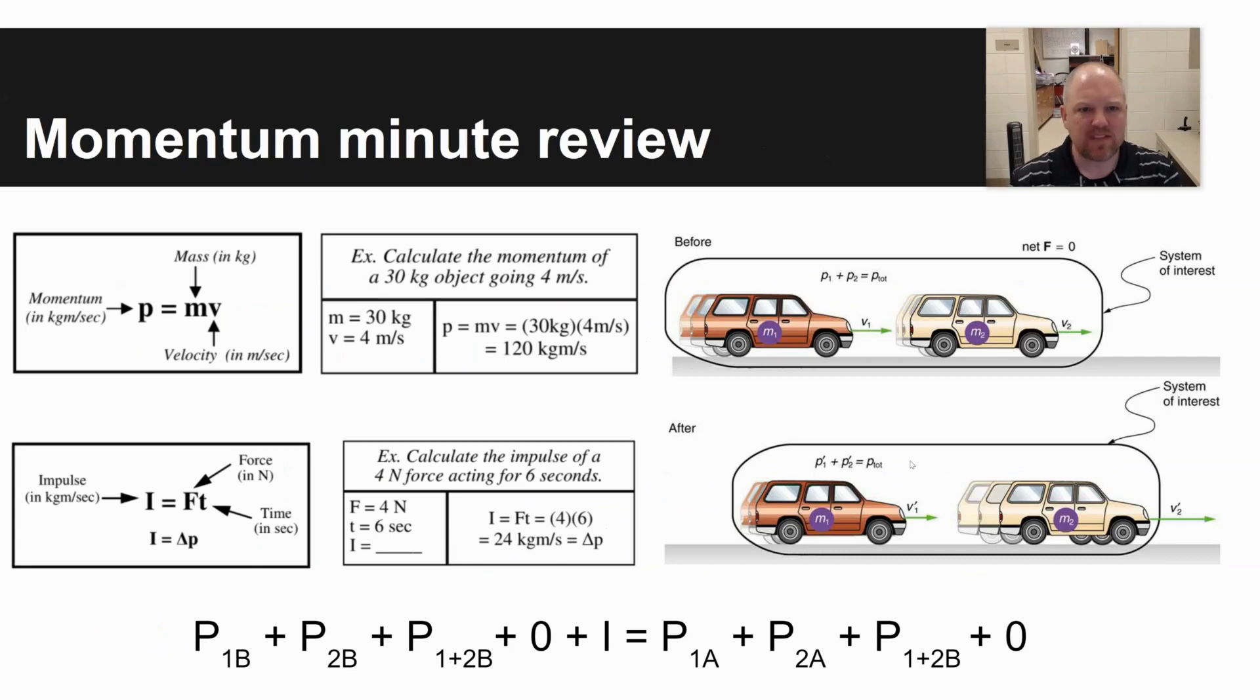So first, a momentum minute review. First of all, momentum is a product of mass and velocity. So momentum measured in kilogram meters per second is equal to mass times velocity. Why does momentum use P as a variable? Because M stands for mass.